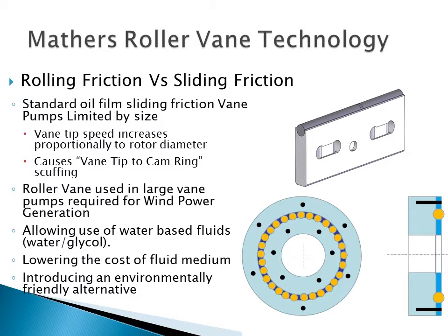Despite hydraulic energy systems having great power density per size of components, the hydraulic equipment required in wind power generation is to be of a very large scale. To achieve this, some further Mathers technologies have been developed, one of which being the roller vane. Rotor sizes of vane pumps are limited by vane tip speeds and tribology conditions. To overcome this, a roller-tipped vane has been developed which allows rolling friction in addition to standard hydrodynamic film creation, eliminating the problem of high vane tip to ring friction. It is also expected this roller vane can allow water-based fluids to be used in place of oil-based hydraulic fluids, providing a cost-effective and environmentally friendly alternative that can also be used for fire suppression.